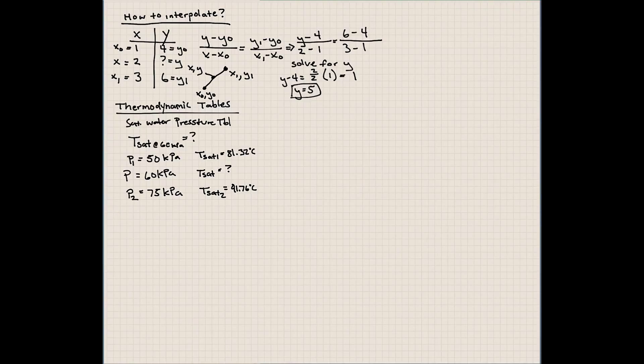We're saying that y = y₀ + (y₁ - y₀) × (x - x₀)/(x₁ - x₀). Now we can replace these variables easily with whatever we are interested in. What we're interested in is finding T_saturation.